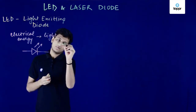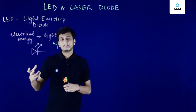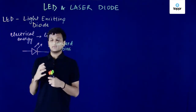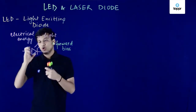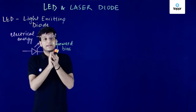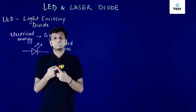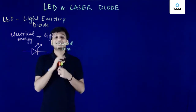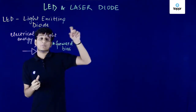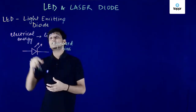LEDs are operated under forward bias — we attach the positive side of the cell to the P side and the negative side to the N side. After forward bias is applied, the holes in the P side and the electrons in the N side start to recombine. As soon as they recombine, a lot of energy is emitted in the form of photons. If the wavelength of those photons lies in the visible range, we can see the different colors of the LED.